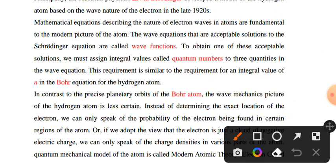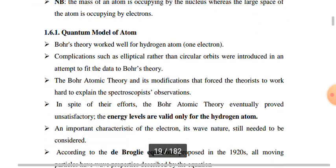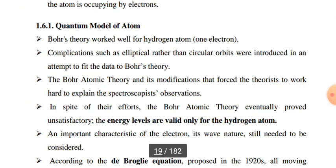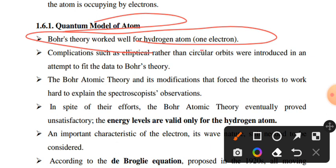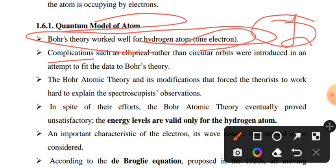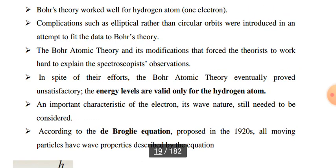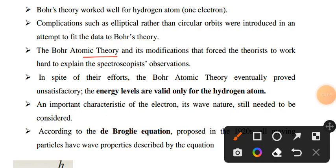In contrast to the precise planetary orbits of the Bohr atom, the quantum mechanical picture of the hydrogen atom is less certain. The Bohr atomic theory and its modifications worked hard to explain the spectroscopic observations.